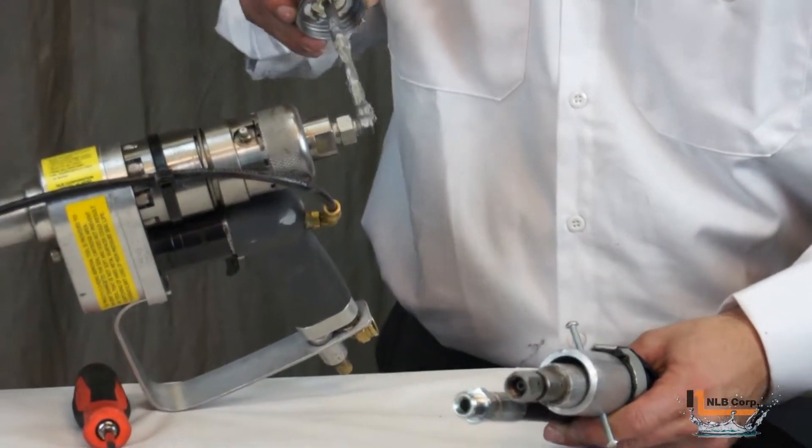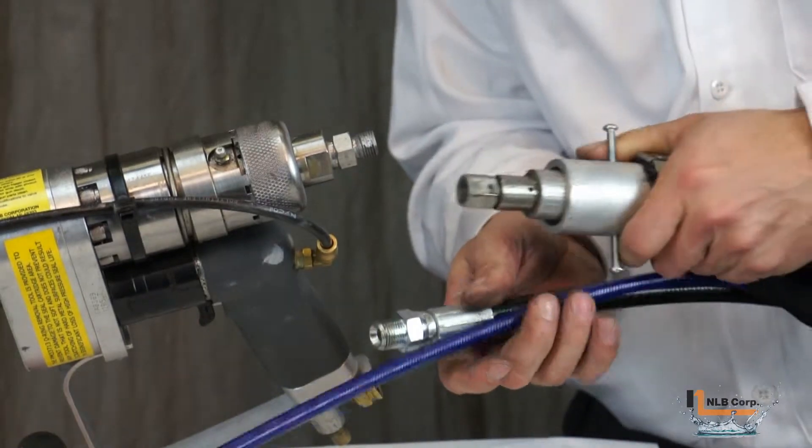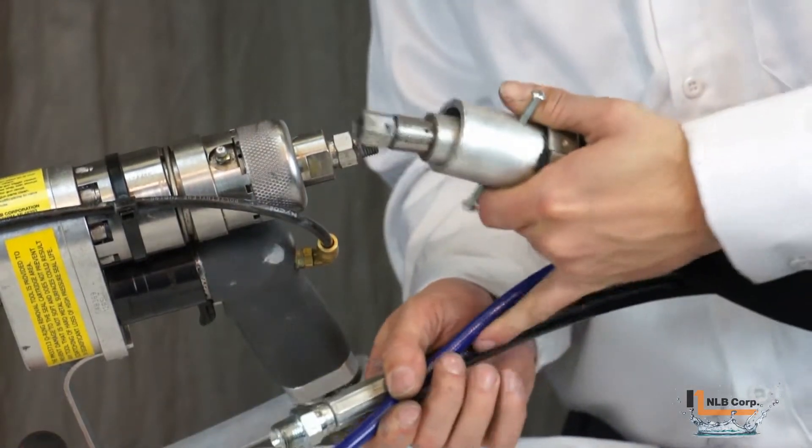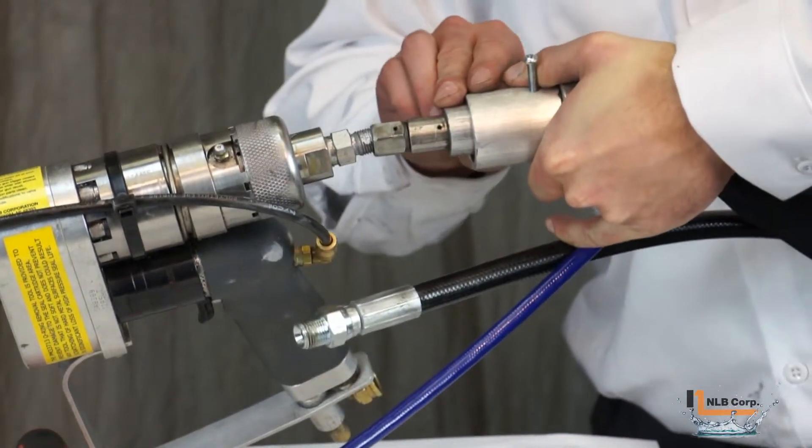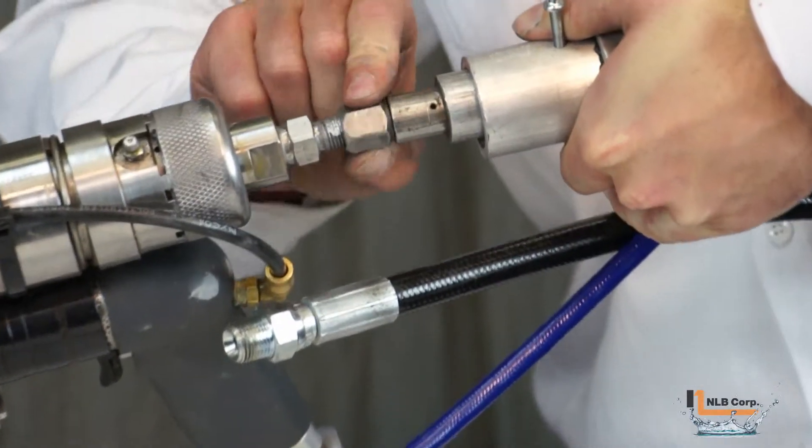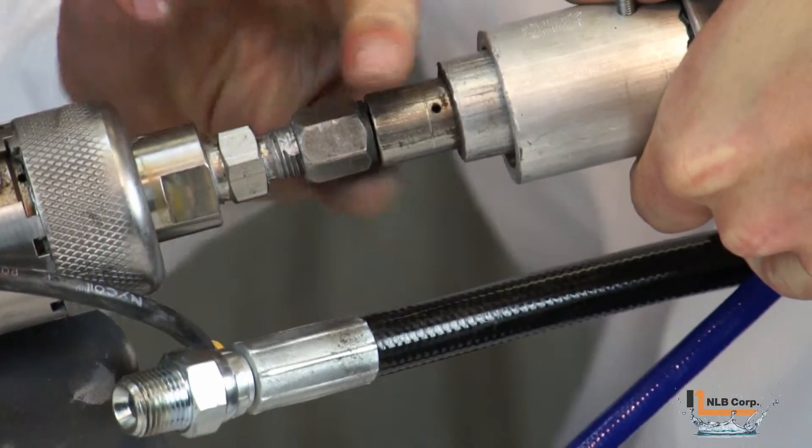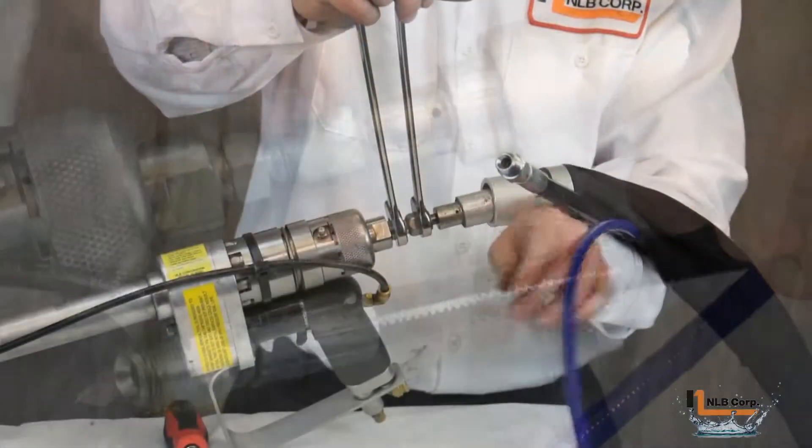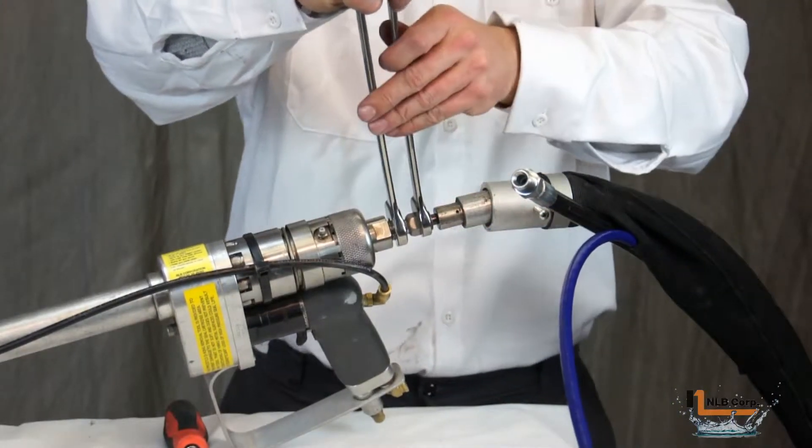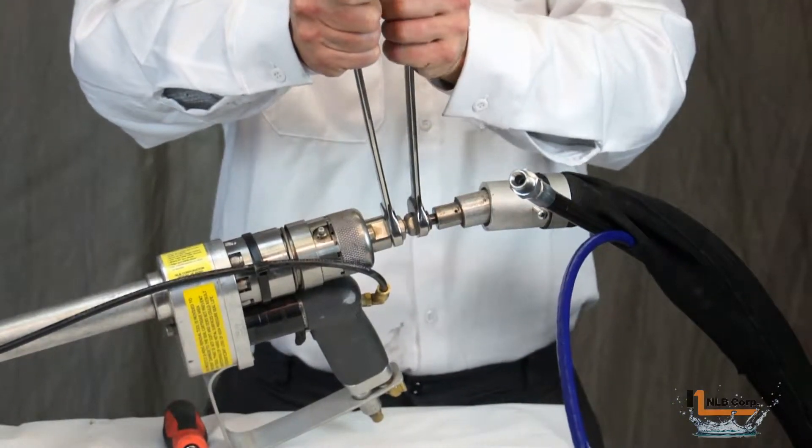To begin, apply anti-seize to the high pressure water connection point on the lance. Once this is done, thread the high pressure supply line onto the fitting, then snug the two together using wrenches.